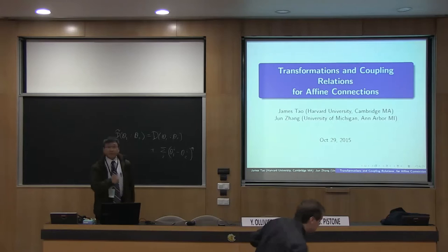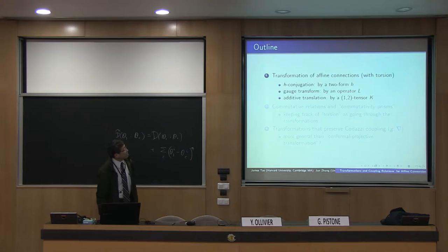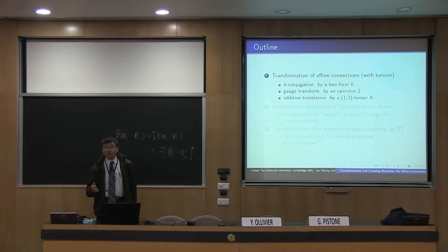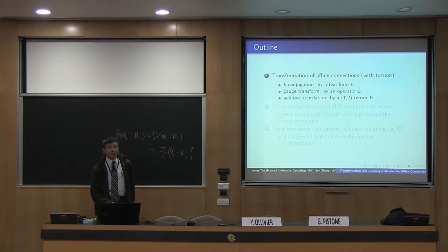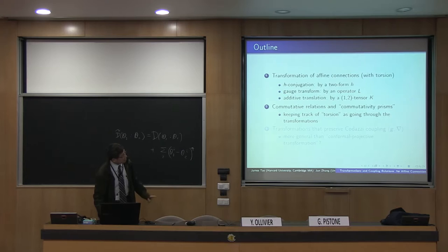This talk is a co-authored contribution with James Tauk, who is also in the audience, on transformation and coupling relations of affine connections (F-I connections). There are three parts: first, we will talk about the transformation of general F-I connections, including those that admit torsion. Torsion is rarely discussed in geometry, so we want a thorough discussion about torsion and how it behaves under various transformations of F-I connections.